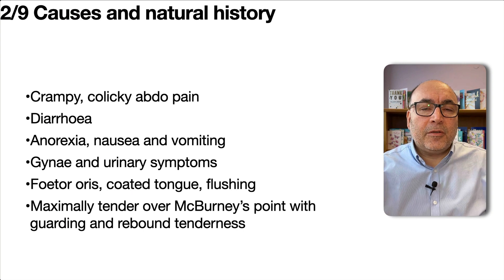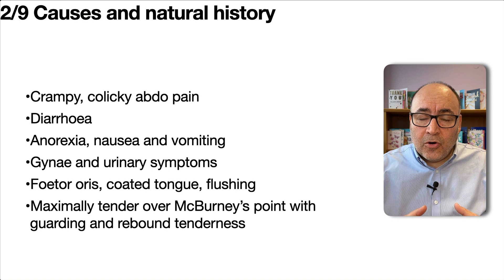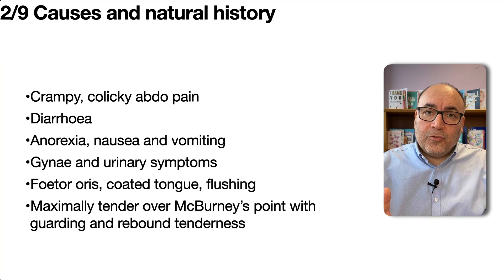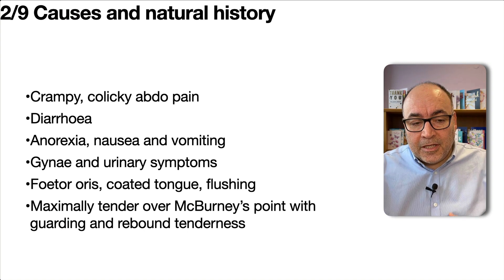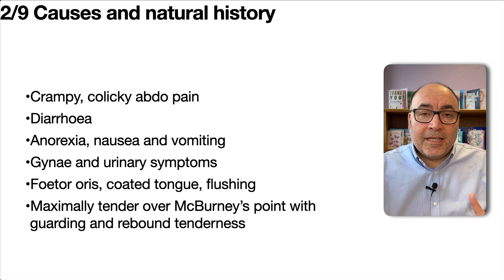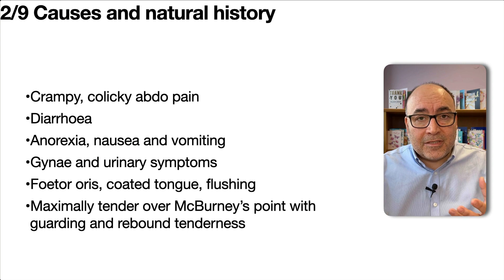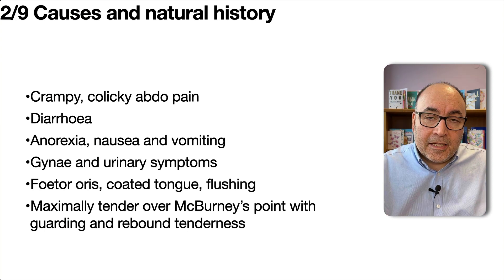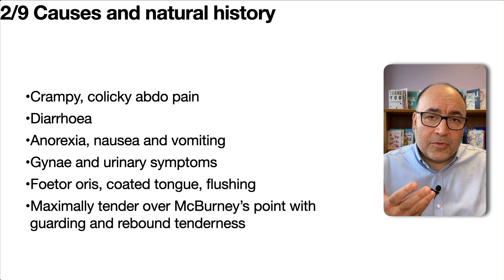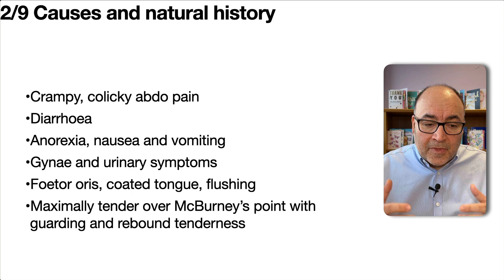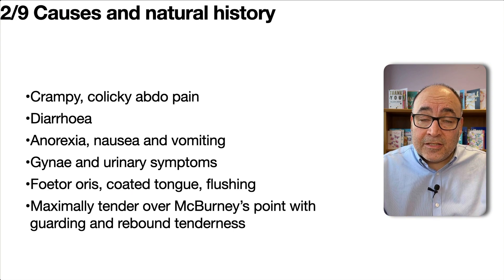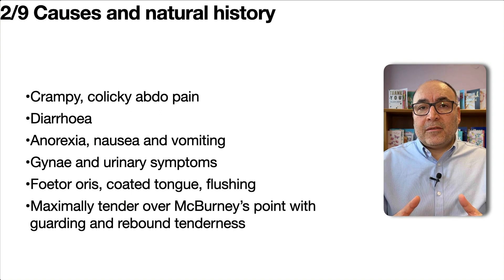The history is usually one of pain in the central abdominal area which is crampy and colicky — meaning it comes in waves of peristalsis — and then migrates to the right iliac fossa. The patient might have diarrhoea and change in bowel habit, anorexia (loss of appetite), and this thing called fetor, which is a bad smell from the mouth and a coated tongue. They will be maximally tender over McBurney's point with guarding and rebound tenderness.